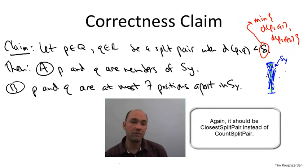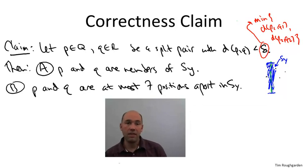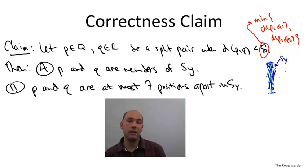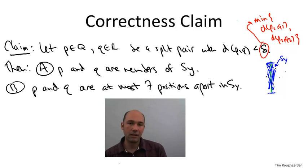We have already argued in the previous video that the overall running time of the algorithm is O(n log n). What remains is to prove correctness. Correctness boils down to the following correctness claim: if we can prove this claim, then the entire algorithm is correct.